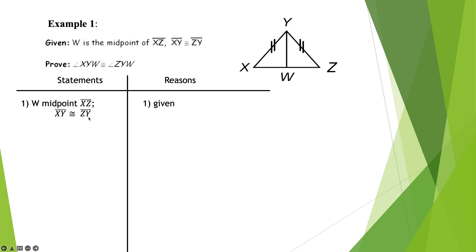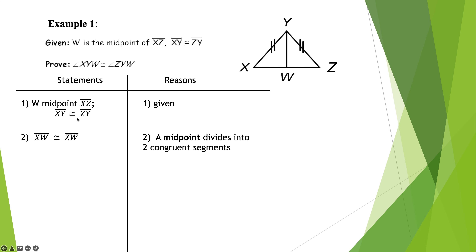I copied down the given — that's always the first step. W is the midpoint of XZ. The very first piece of given says midpoint, so my reason says midpoint. XW is congruent to ZW because a midpoint divides a segment into two congruent segments. Mark it — looking good.